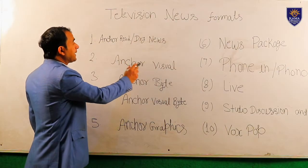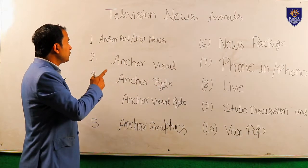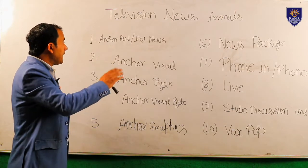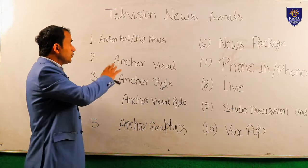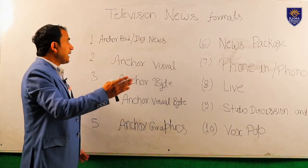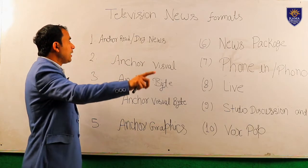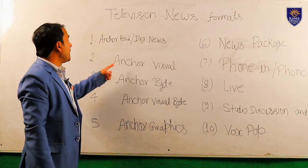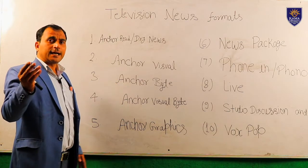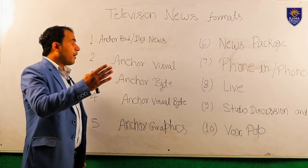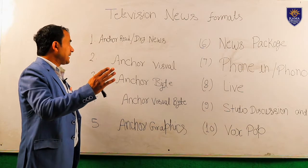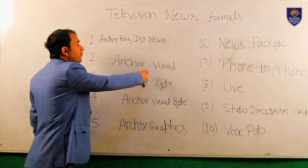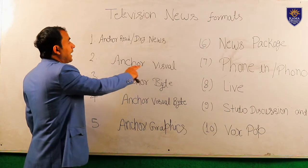The second format is Anchor Visual. Under Anchor Visual, we watch the anchor reading the news on our television screen, and after a few seconds we can watch the visual related to that news. The anchor reads for about 5 to 10 seconds with his face on screen, and after that we see only the visual. This is called Anchor Visual.